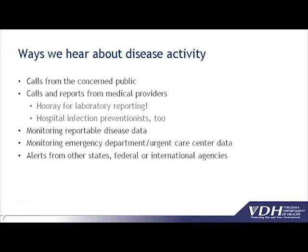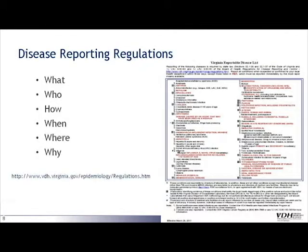I want to make sure everyone's familiar with the regulations for disease reporting and control. Those regulations say what diseases need to be reported to the health department, who has to report them, how, when, and where. There's a link to the regulations and on the right-hand side is the reportable disease list for Virginia — it's a key means by which we learn about disease activity. One reportable condition is any unusual disease of public health concern, which opens the door for anything that seems strange to come to the attention of the health department.